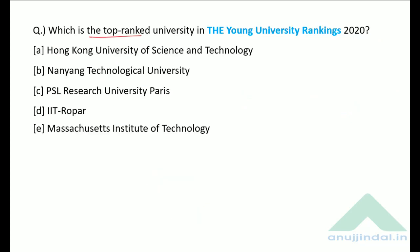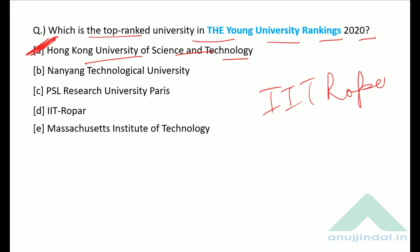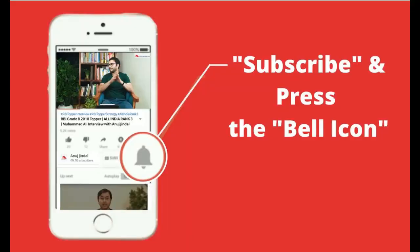Which is the top ranked university in the Times Higher Education Young University Rankings 2020? The number one university is Hong Kong University of Science and Technology. From India, IIT Ropar is ranked first at overall rank 62.